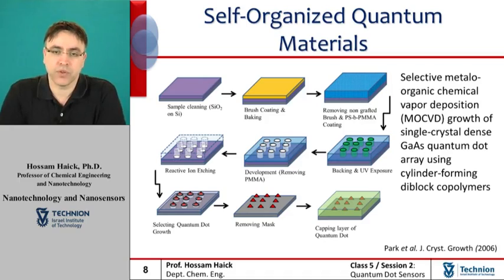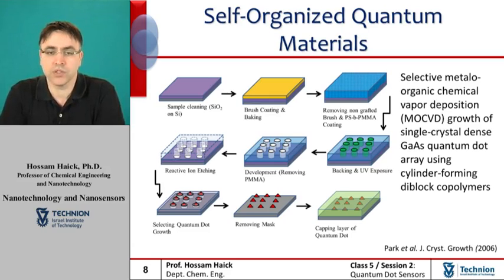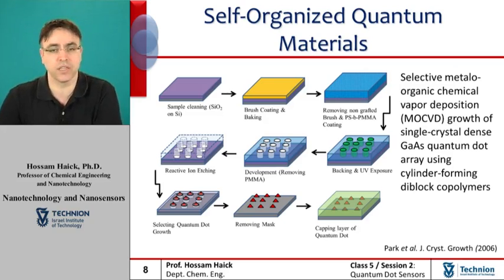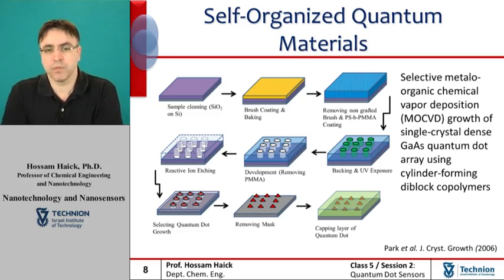An alternative approach for the formation of quantum dots is the use of nanopatterning with di-block copolymers combined with selective metal-organic chemical vapor deposition (MOCVD). In this approach, the block copolymer lithography process consists of a series of pattern transfers from a dense array of nano-sized holes in a di-block copolymer thin film to a template mask, allowing patterned access to the semiconducting substrate during selective growth. The film thickness is controlled by varying the solution concentration and the spin speed of the spin coater. Following the deposition of the block copolymer pattern, metal-organic chemical vapor deposition is applied.